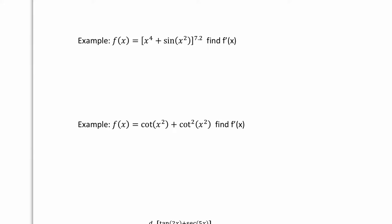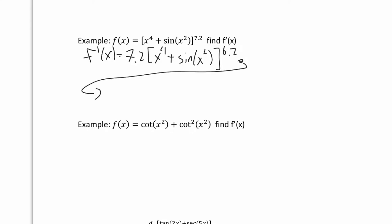Let's find the derivative of this function. Notice there's a power of 7.2 on the very outside — a power rule. So we bring down 7.2, rewrite the inside function, and multiply by its derivative. So f prime of x equals 7.2 times x to the 4 plus sine of x squared, all to the power of 6.2, times the derivative of the inside: 4x cubed plus the derivative of sine is cosine of x squared, but now we need another chain rule, times 2x. Then we close off the bracket and there's our answer.